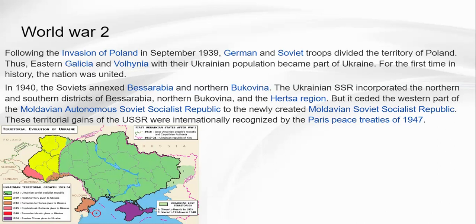Here we have a map of areas gained by Ukraine. As you can see, they lost certain areas when the first Ukrainian states emerged — to Russia — but gained territory from Slovakia, Poland, and Romania during the USSR period. Russia gave them to Ukraine to build a better relationship, but after the fall of the USSR, well, you know what happened.